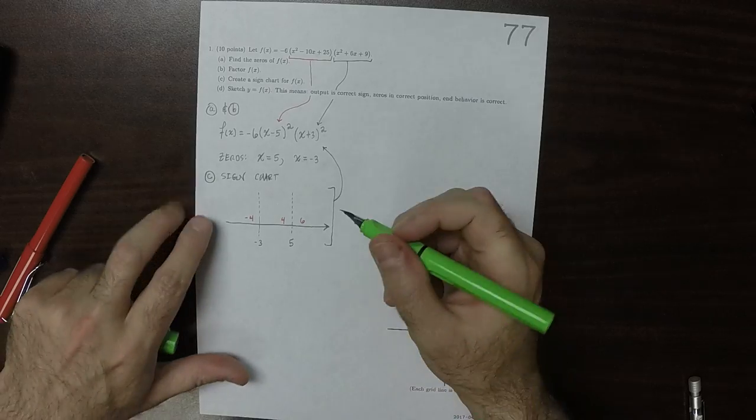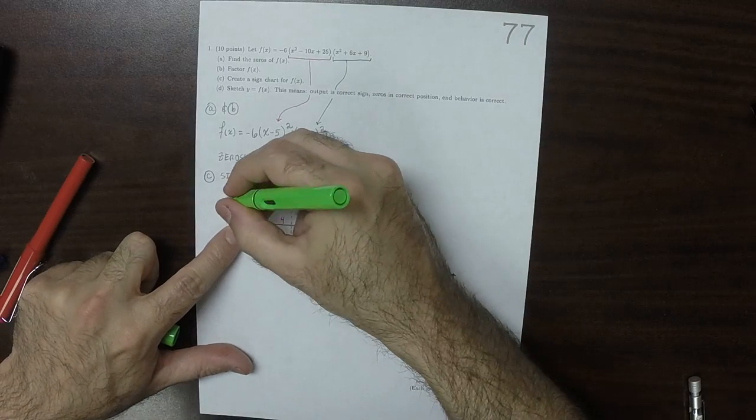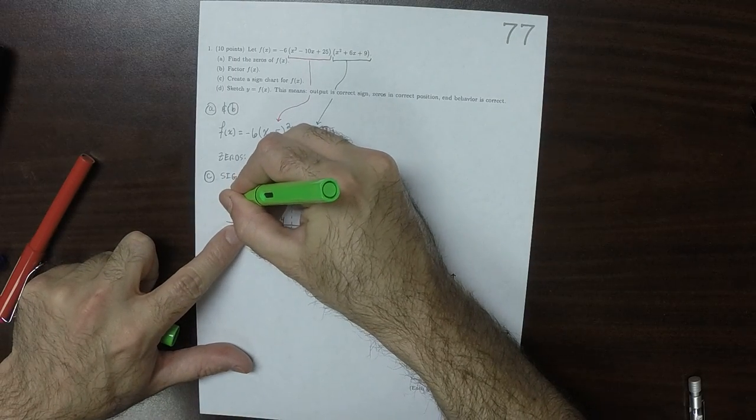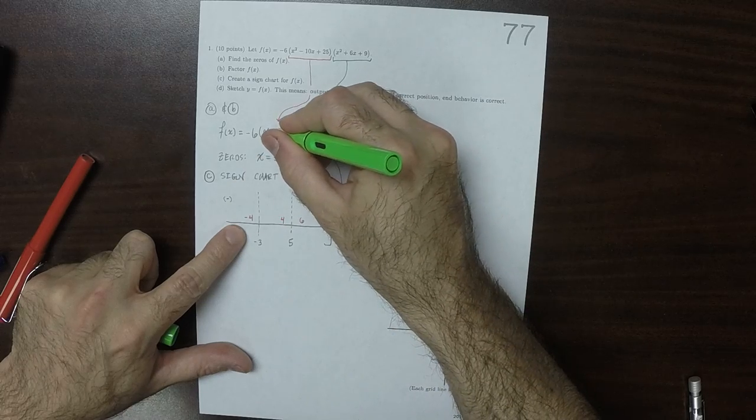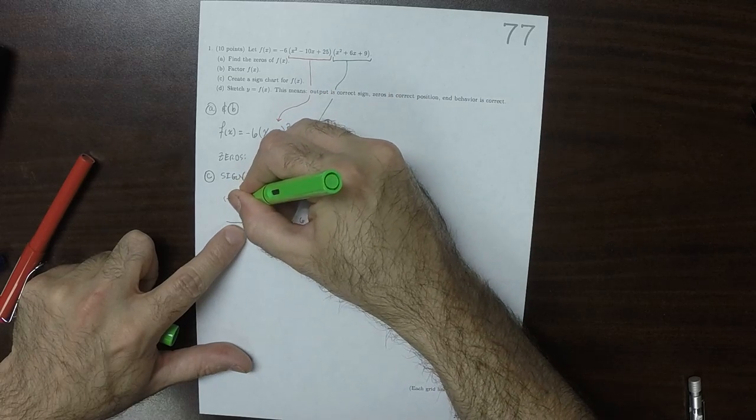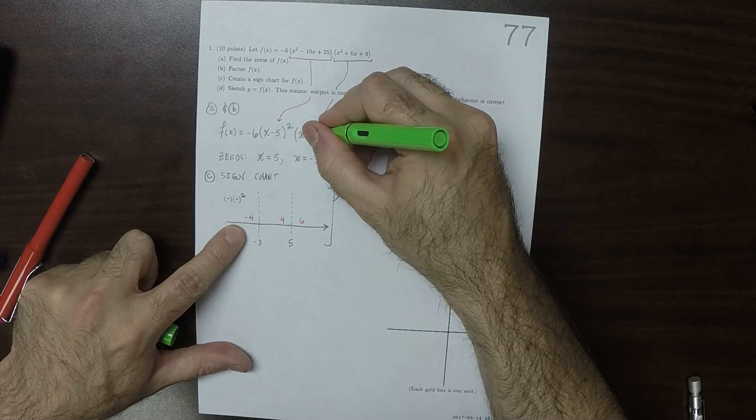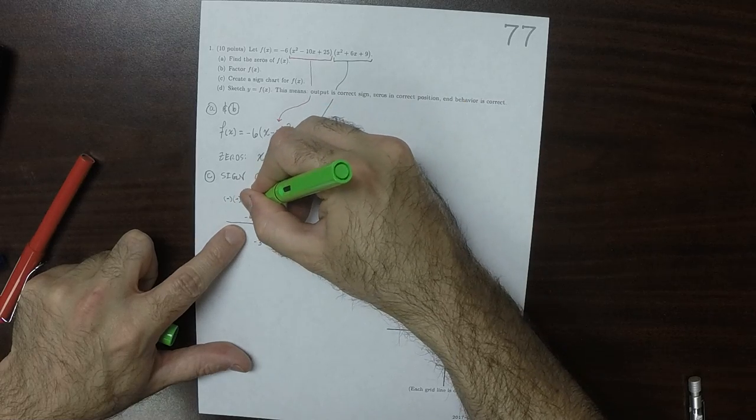So evaluating this at negative 4, the negative 6 is negative, and then that'll be negative squared, and then that'll be negative squared.